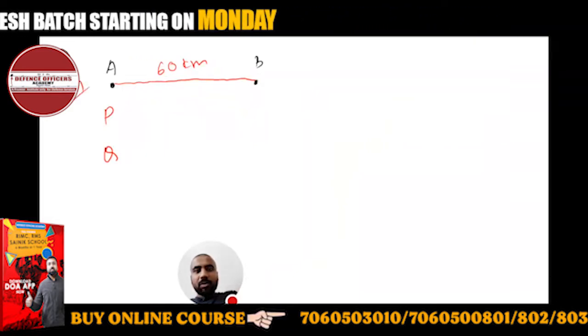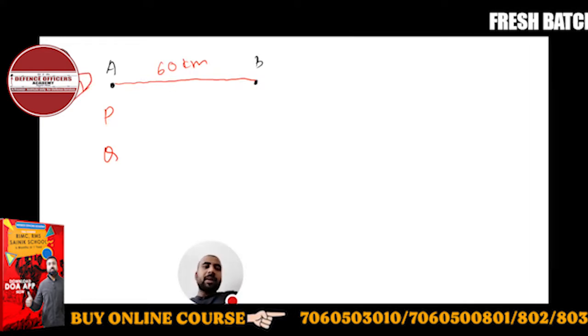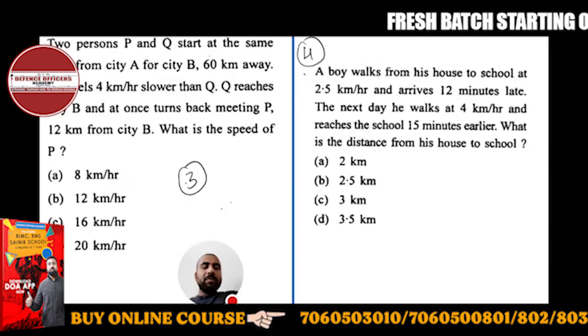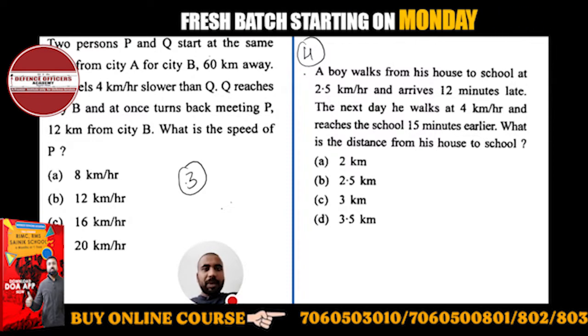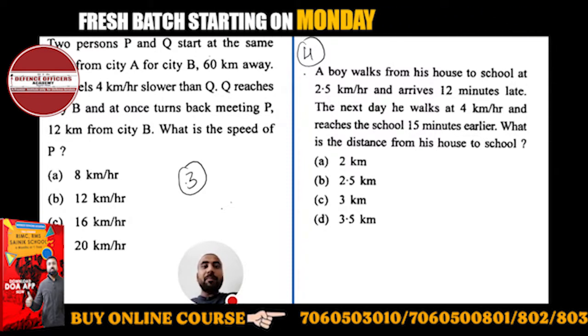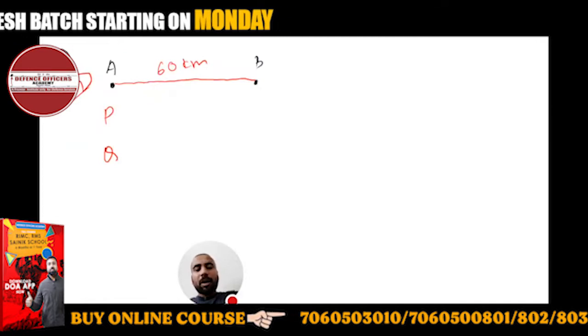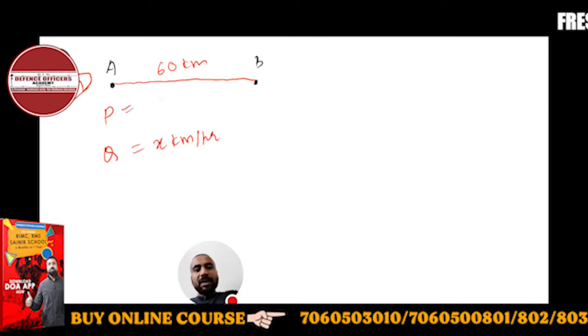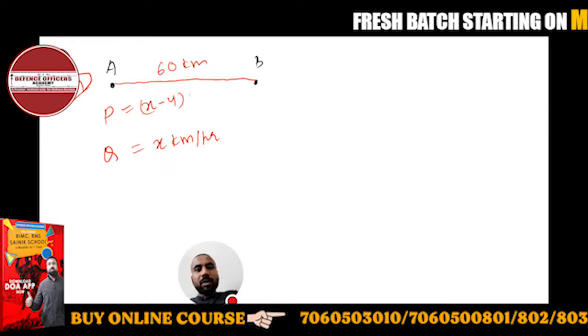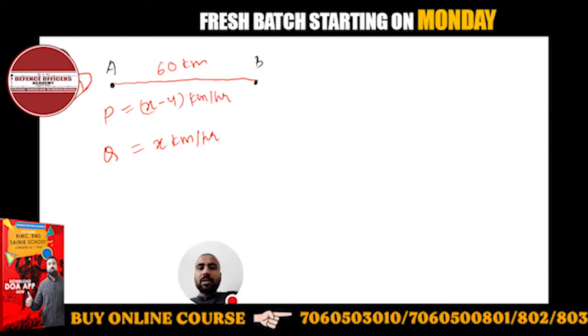Now what is given to you? P travels 4 km per hour slower than Q. So if Q's speed is x km per hour, then P's speed will be x minus 4 km per hour. You have to understand this.